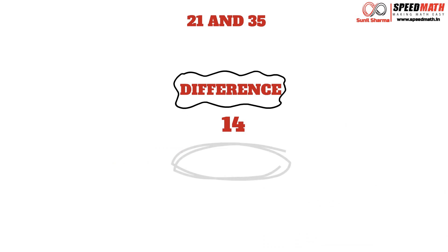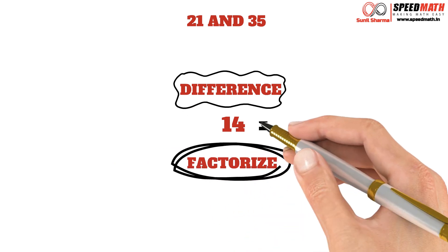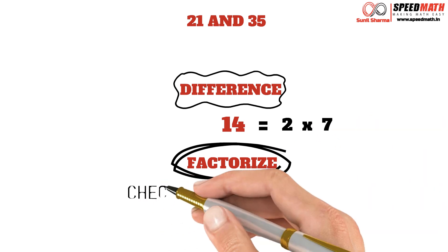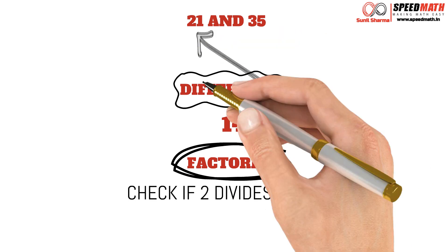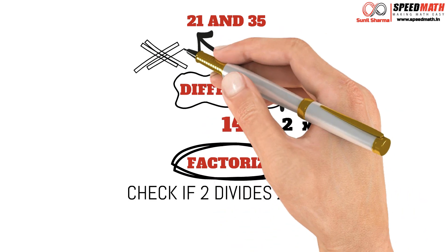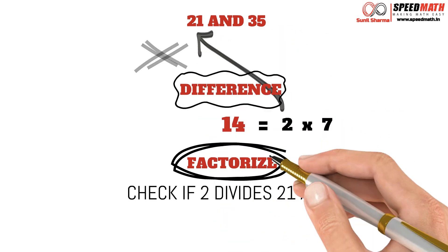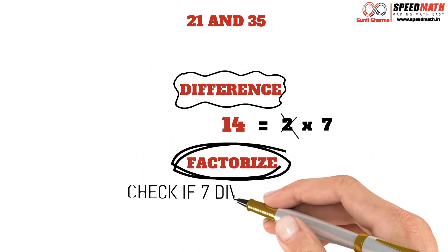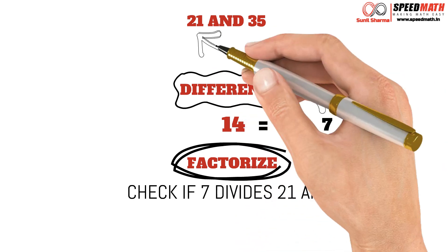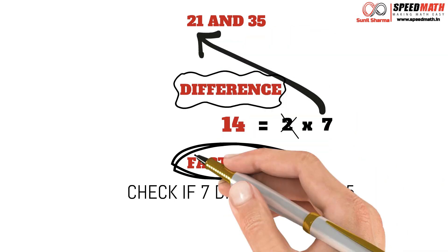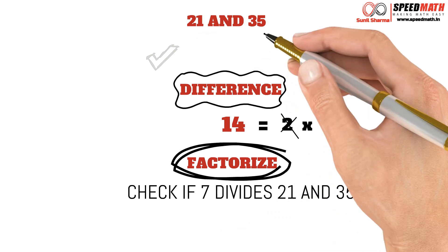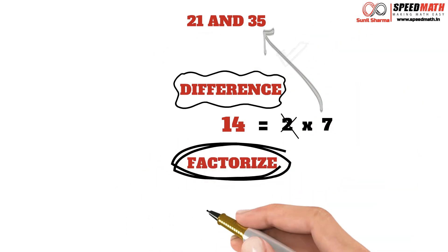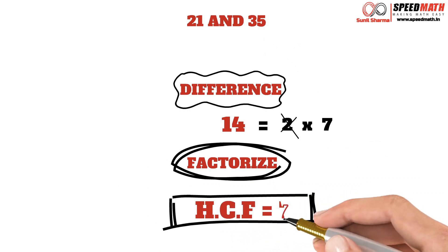So step 2: we will have to factorize 14. Now 14 can be factorized as 2 into 7. We need to check whether 2 divides 21 and 35. Now 2 definitely does not divide 21, so 2 cannot be the HCF. Now we will repeat the same process with the other factor, which is 7. We will check whether 7 divides 21 and 35. Yes, 7 definitely divides 21 and 7 also divides 35. So since 7 divides both the numbers, HCF as per our rule is 7.